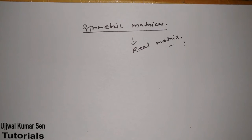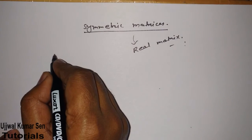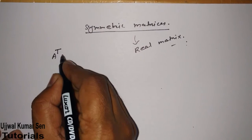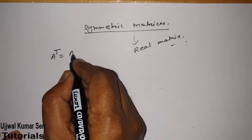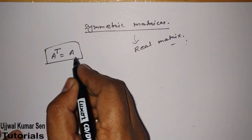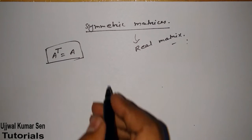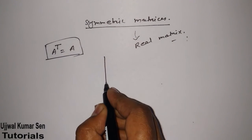So when is a matrix known as a symmetric matrix? Suppose we have given a matrix A. If the transpose of A is equal to A, it is known as a symmetric matrix. How can you tell whether a given matrix is symmetric or not?